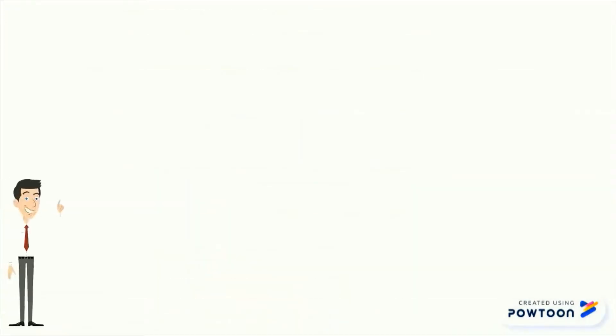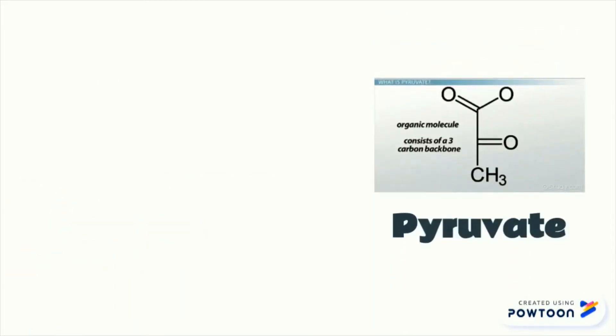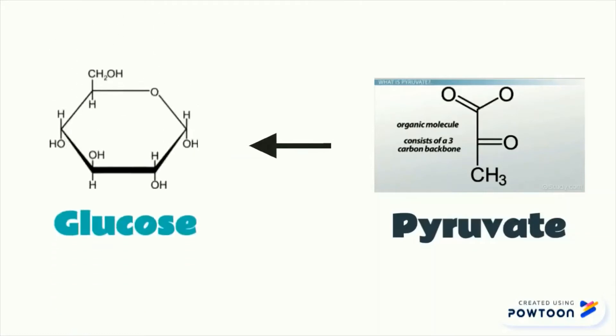Next, as we all know, the breakdown of glucose to form pyruvate is known as glycolysis. In turn, during starvation, the pyruvate will reform back to glucose and this process is known as gluconeogenesis.